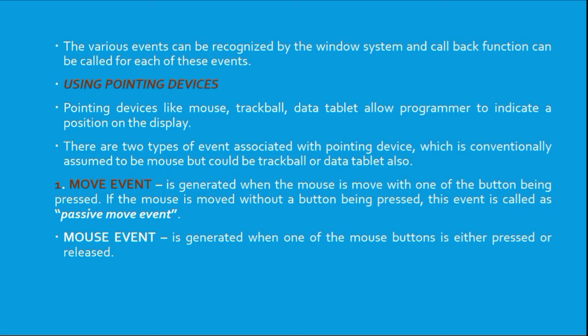The second mouse event type is a mouse button event, which is generated when one of the mouse buttons is either pressed or released. A signal is sent to the CPU when you press the mouse button. So an event is its occurrence in time — if you move the mouse or click a button, something is going to happen.